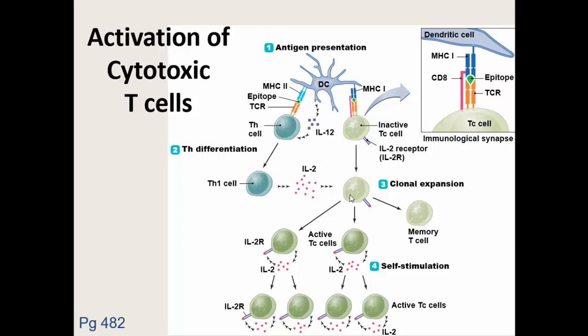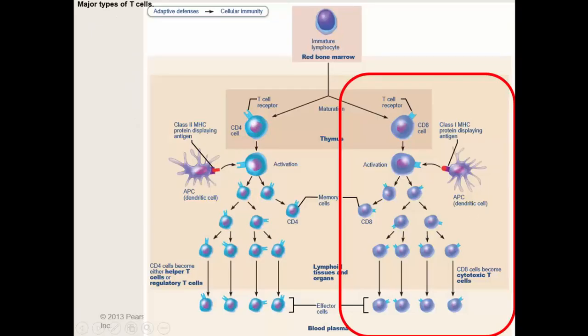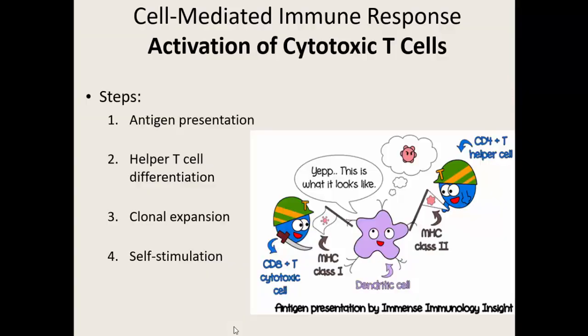We end up with a whole bunch of active cytotoxic cells whose main job is to go around and kill cells — their nickname is natural killer cells. Most of the way they kill is through apoptosis: they go up to infected cells and encourage those cells to kill themselves, sometimes creating toxins to kill infected cells. If we have an MHC1 antigen, we activate cytotoxic cells, have clonal expansion including some memory cells, then self-stimulation making lots of copies. On the other branch, with the class two antigen, we activate CD4 cells — they also undergo clonal expansion, make memory cells, and then become either a helper T cell or a regulatory T cell.